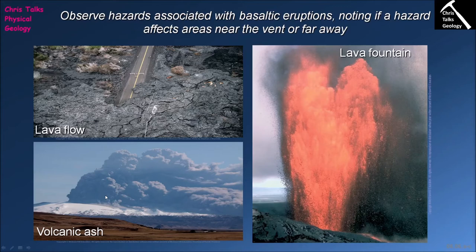Most basaltic volcanoes will not produce large amounts of ash, so typically it's not a major issue. However, given the right conditions these volcanoes can produce large amounts of ash with profound effects on the surrounding area — damaging property, causing asthma attacks, and in some cases putting enough ash into the atmosphere to make it difficult for planes to fly that path, forcing them to divert. Lava fountains are very dangerous if you stand right next to them, but as a hazard they are relatively low risk because most people will naturally want to keep away from them.